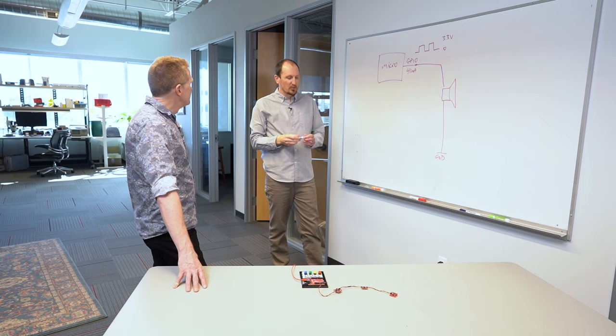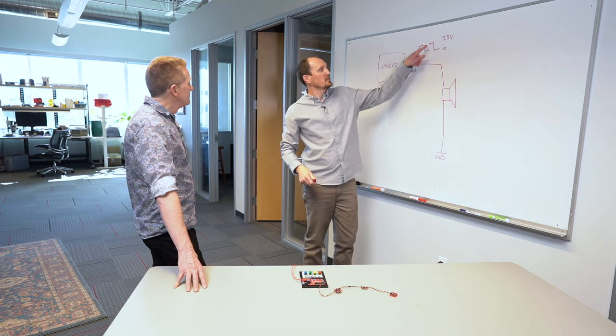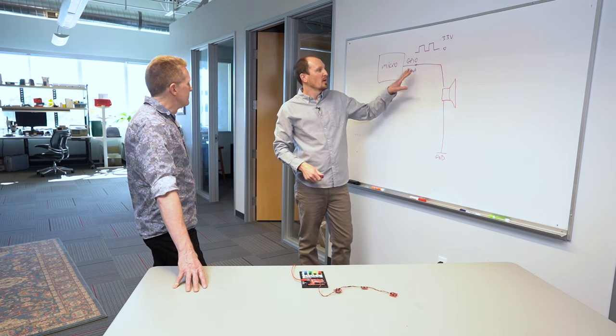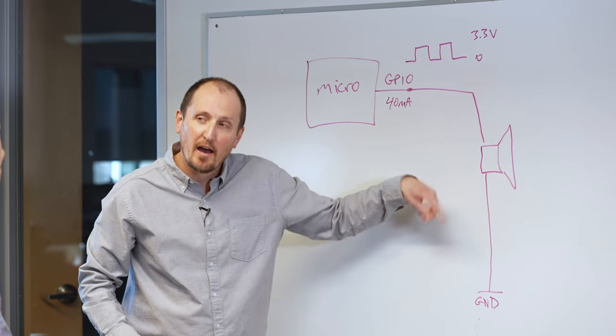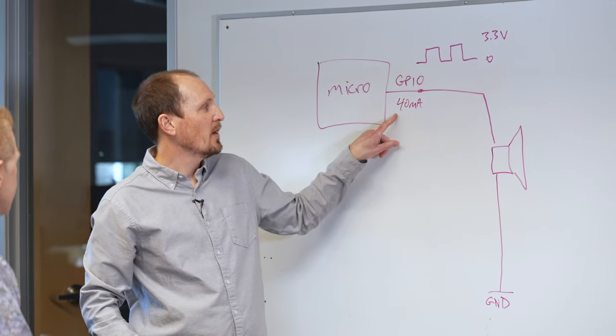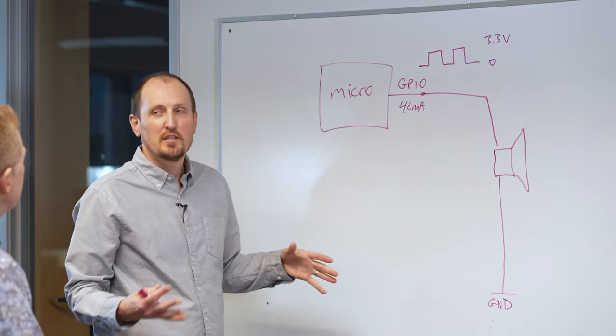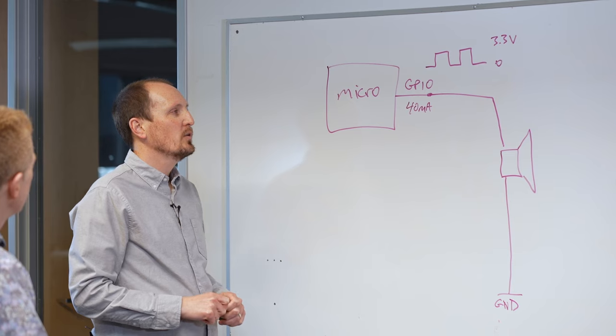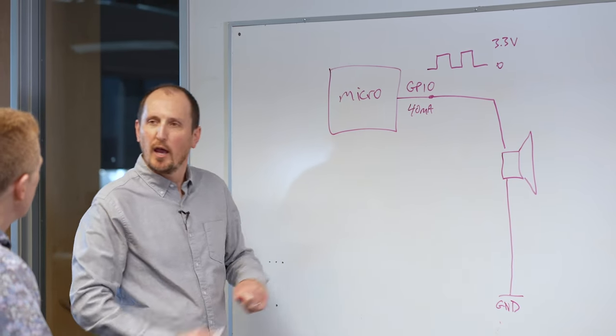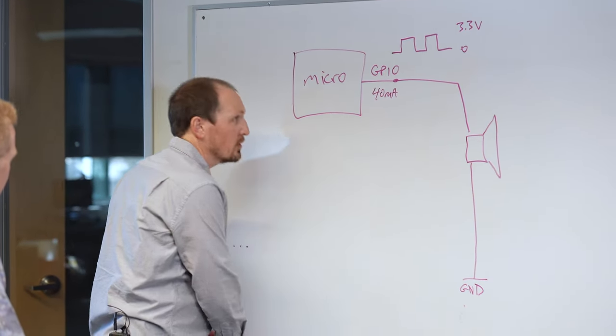And remember, we're toggling this at a 50% duty cycle to make a frequency. So really, this is only going to see current half of the time. So you're really only getting about 20 milliamps of current through this. And that's a pretty decent volume.